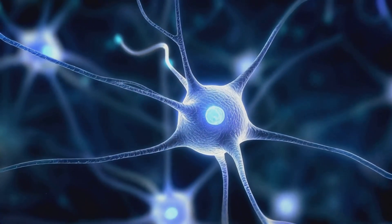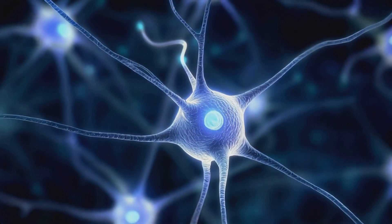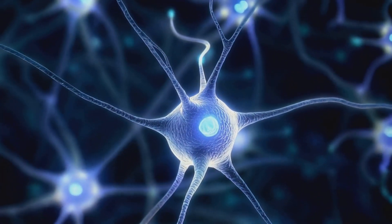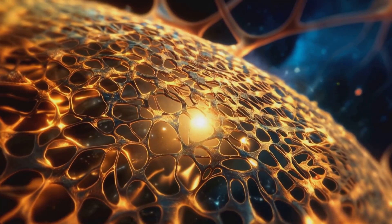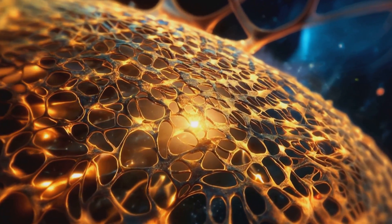Our brains work the same way. Inside our neurons, microtubules act like tiny quantum processes. Their vibrations mirror the coherent interference patterns of the universe, forming holographic reflections of reality.